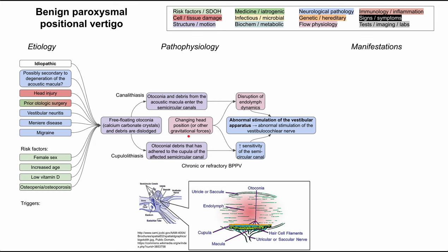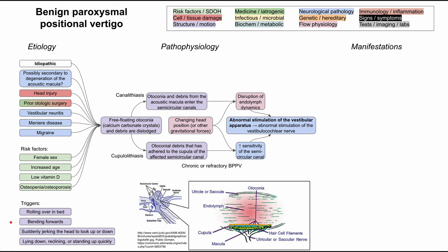It's worth thinking about the triggers that cause changes in head position and trigger episodes of benign paroxysmal positional vertigo. These include rolling over in bed, bending forwards, suddenly jerking the head to look up or down, and lying down, reclining, or standing up quickly — especially after a period of sitting still. All of these involve quick rotation of the head relative to gravity, which is the positional change that triggers BPPV.